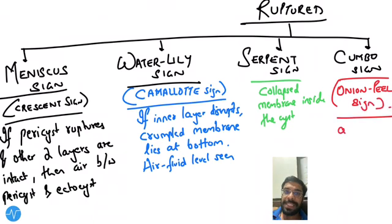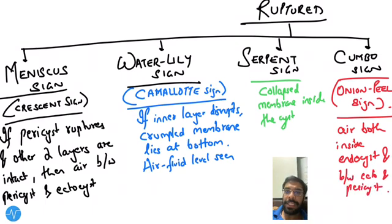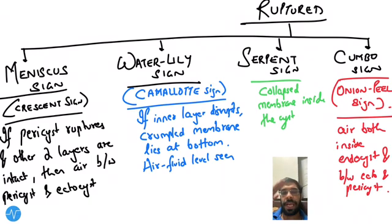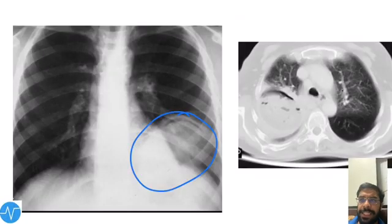In the Cumbo sign, also known as the Onion Peel sign, multiple layers rupture. Air is seen both inside the endocyst and between the pericyst and ectocyst layers, creating layers of air resembling an onion peel, hence the name Onion Peel or Cumbo sign.